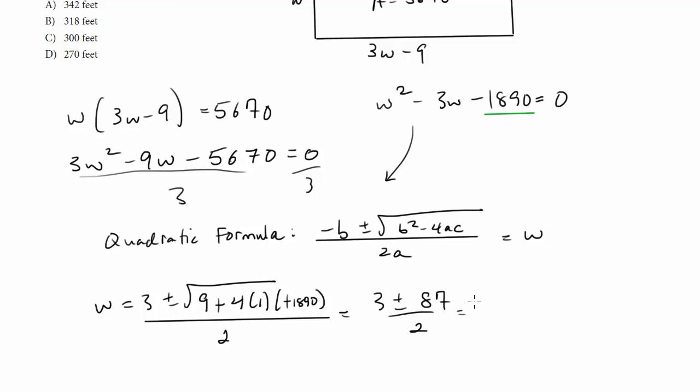So we get 3 plus or minus 87 over 2. So this is going to be either equal to 3 plus 87 over 2, which is 90 over 2, which is 45. Or 3 minus 87, which is negative 84 over 2, which is negative 42.